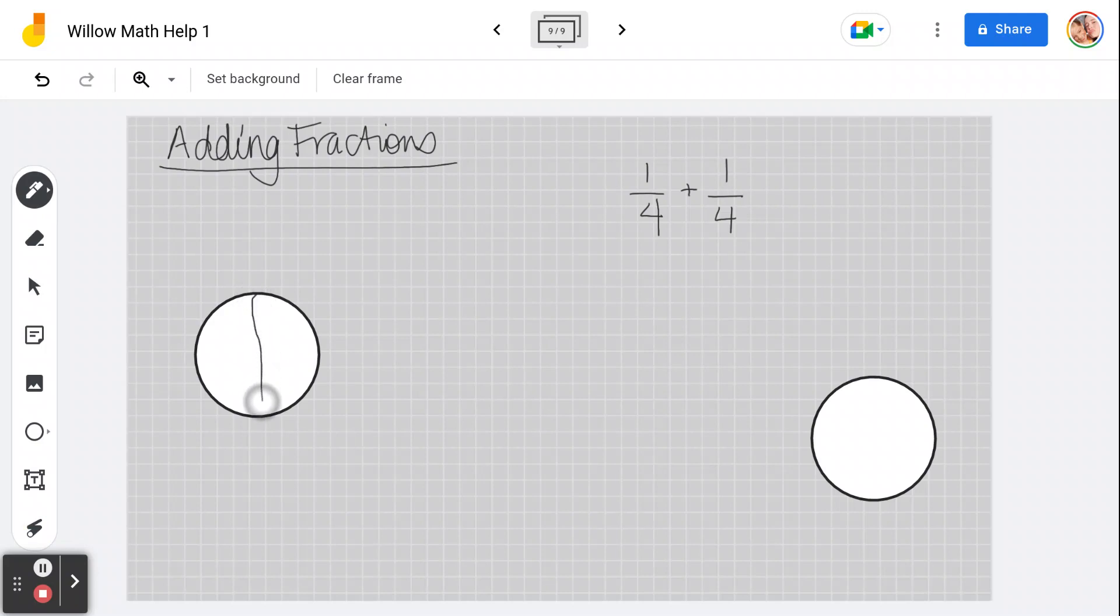If I divide my circle evenly, pretend this is even, and I eat a quarter of the pizza, that's this. And then I eat another quarter of a pizza, that's this.